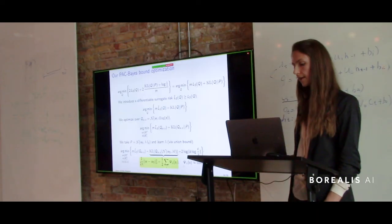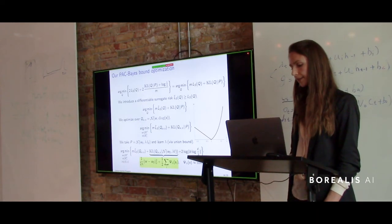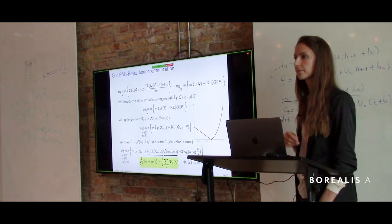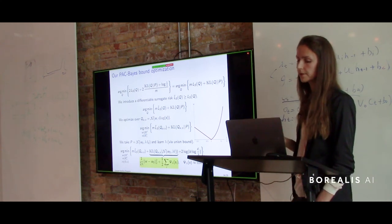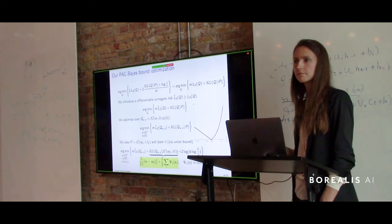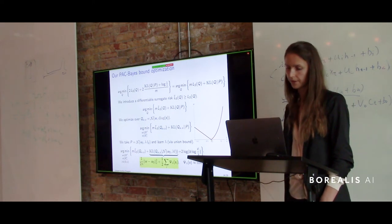The PAC-Bayes theorem requires setting the prior P before seeing the data, but you can still learn lambda from the data and account for it via union bound. Our final objective is the empirical risk plus the KL divergence between two Gaussians, which can be computed analytically: the L2 distance between weights W and random initialization W_0, plus some penalty terms due to the variances. If the posterior variance S is larger than the prior variance lambda, you incur more penalty; if they're close, the penalty is almost nothing.